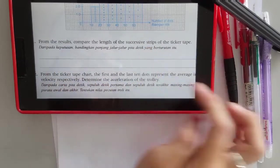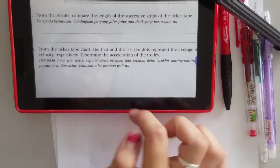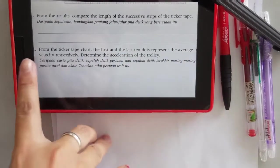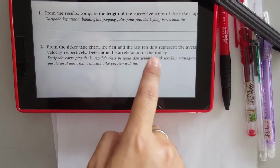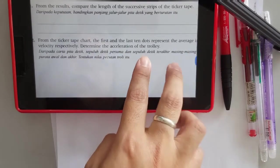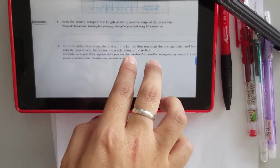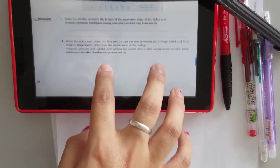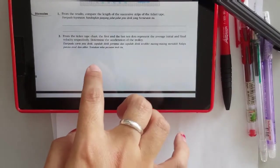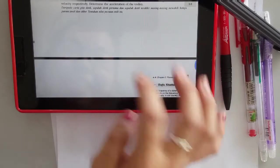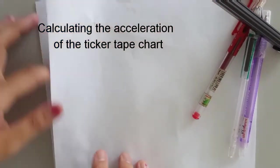please compare the length of the successive strips in the ticker tape. Now what I'm going to do in this video is actually this part number two. From the ticker tape chart, the first and the last 10 dots represents the average initial velocity and the final velocity to determine the acceleration of the trolley. So I'm going to teach you guys how to do this right now. So let's go back to our graph.